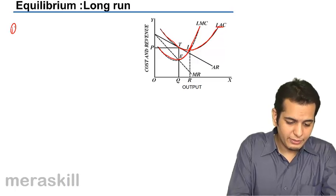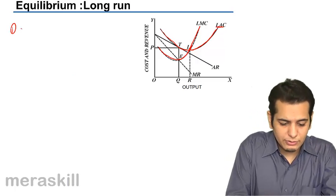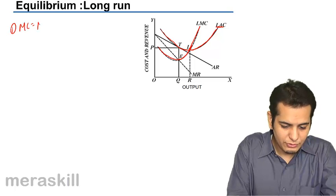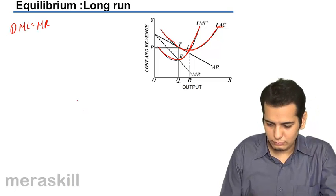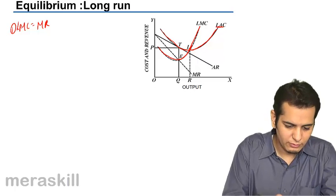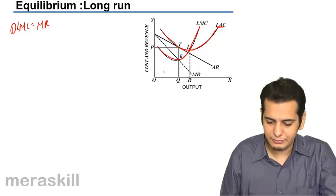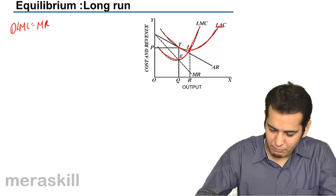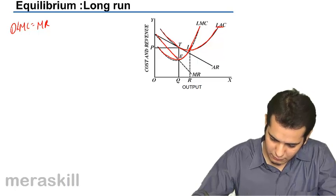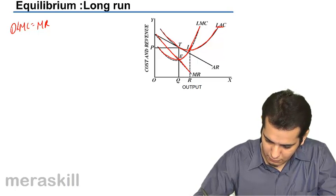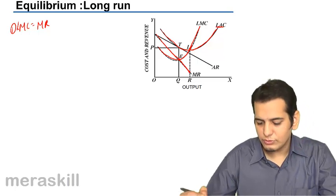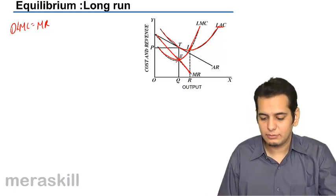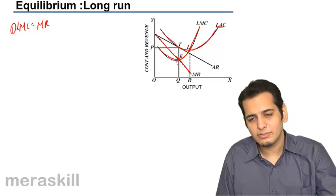Now the first case, the first order condition, is find a point where MC is equal to MR. But this is long run so this will be LMC. This is my MR. So this is the point where MC cuts MR, we will name that point as E.